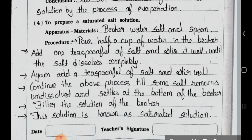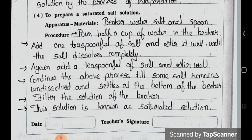See number 4: To prepare a saturated salt solution. Apparatus and materials are beaker, water, salt and spoon. Procedure: Pour half a cup of water in the beaker.